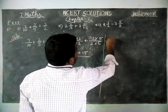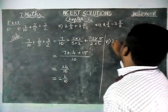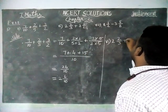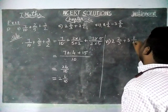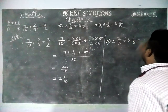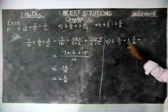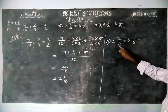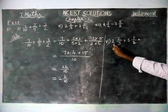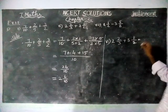Part (f): 2 and 2/3 plus 3 and 1/2. The denominators are different and these are mixed fractions, so we are going to convert them into improper fractions.